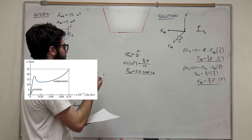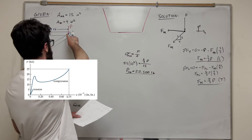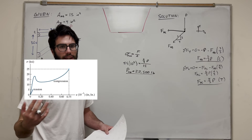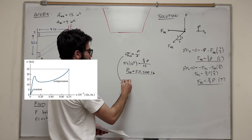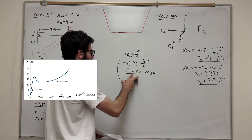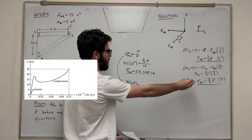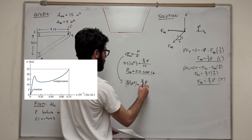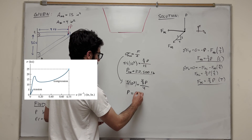Force BC is in tension, so we need to use a max of 5 KSI instead of 25 KSI. Doing the equation again for BC: 5 × 10³ equals force BC over its area. Force BC is 4/3 P and its area is 4 inches squared. Solving for P gives us P equals 1,500 pounds.